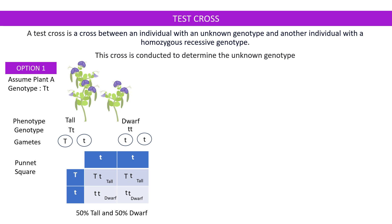So if on doing this cross we receive offspring which display both tall and dwarf characteristics — some of the offspring are tall and some are dwarf — that means the parent plant must have been a heterozygous plant.